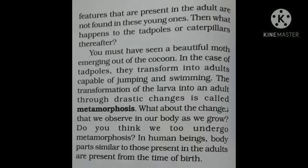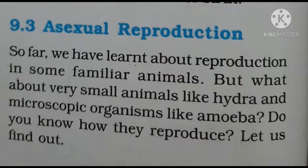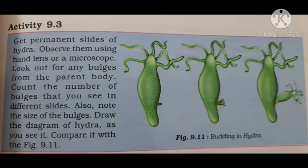This is all about sexual reproduction. Now we will start the second type of reproduction — asexual reproduction. So far we have learnt about reproduction in some familiar animals, but what about very small animals like hydra and microscopic organisms like amoeba? Do you know how they reproduce? Let us find out. We see asexual reproduction in these organisms.